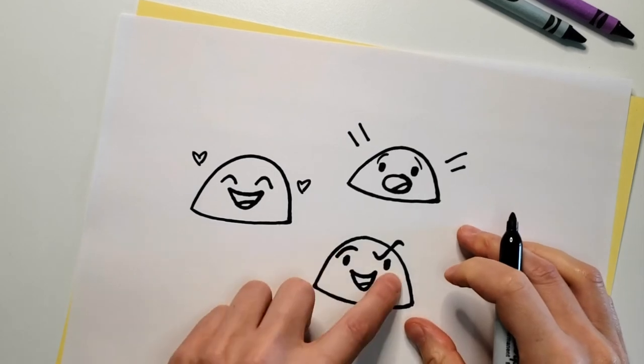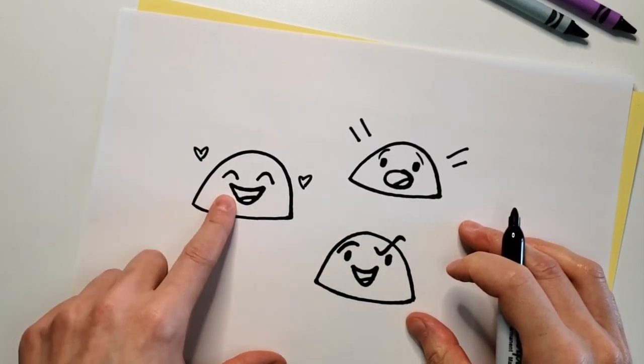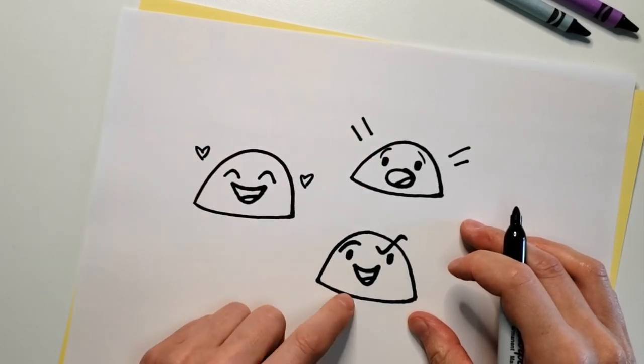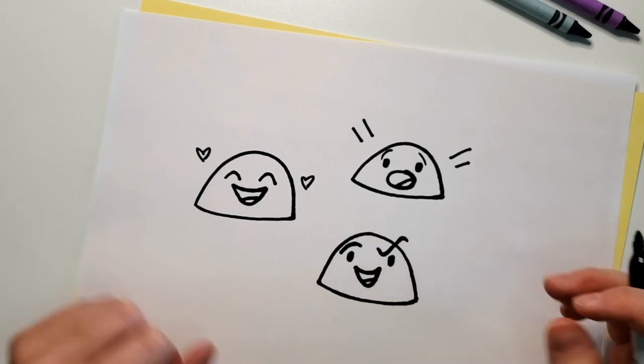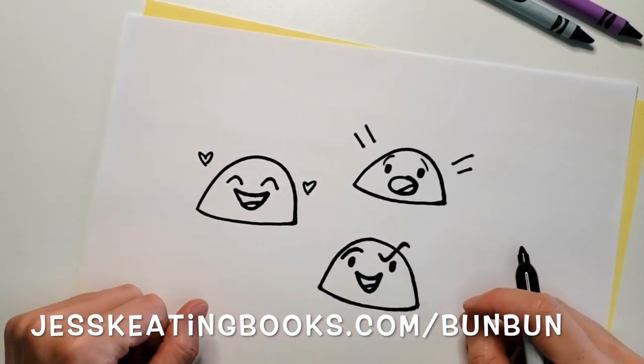So you see, just by changing the eyes and eyebrows, we have a happy Bon Bon, a shocked Bon Bon, and a kind of sneaky Bon Bon. So you can play around with those very simple shapes and lines to create all sorts of different Bon Bons.